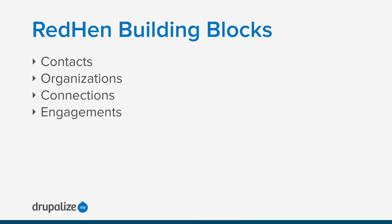Before we get started, let's take a look at what exactly makes up a CRM. Any customer relationship management software has, at its core, these basic pieces, and RedHen is no different. Contacts allow you to track the personal information of your customers, whether or not they have accounts on your website. Organizations allow you to track companies or other groups of interest. Connections help define the relationships between your contacts and organizations, and engagements can help track a contact's activity within your organization.